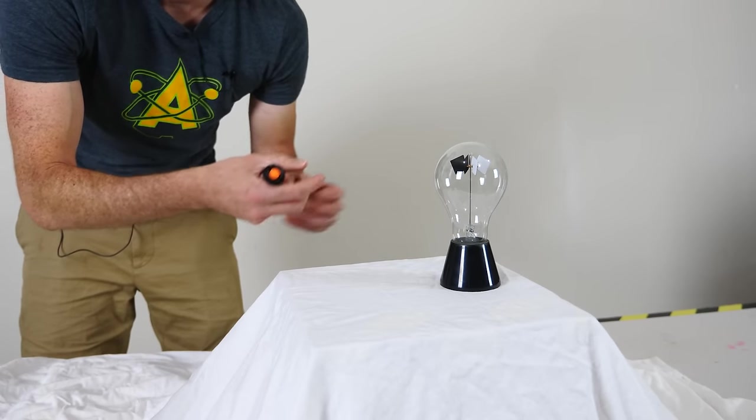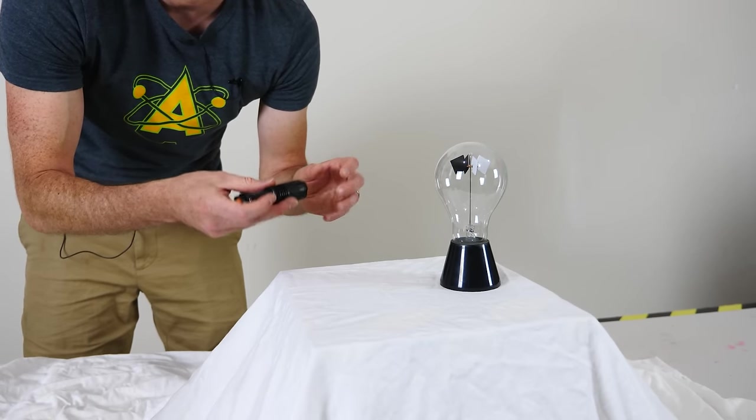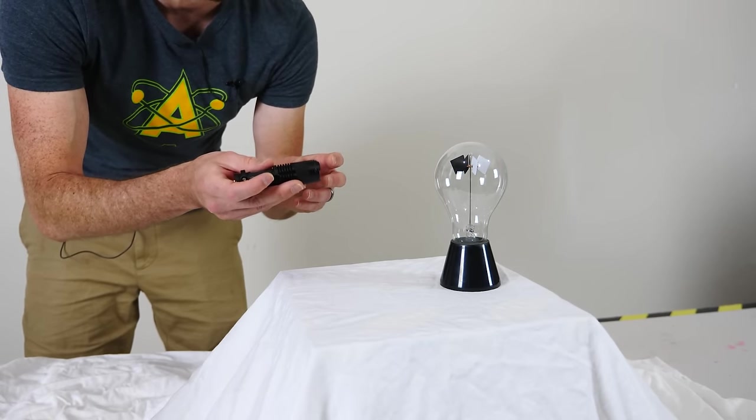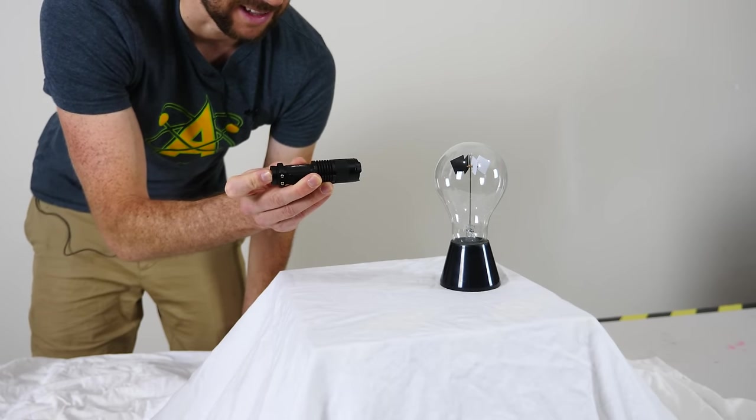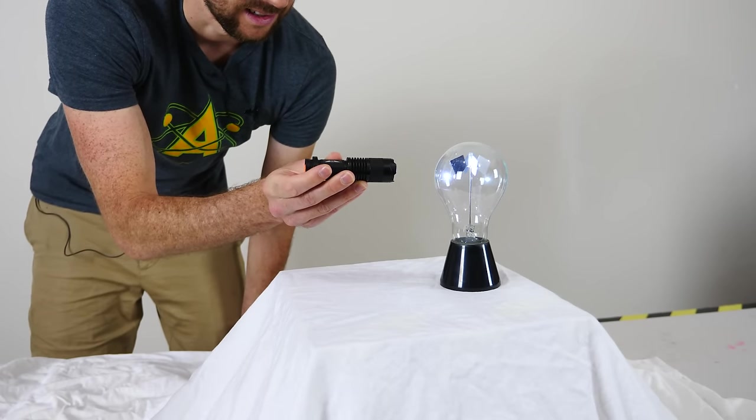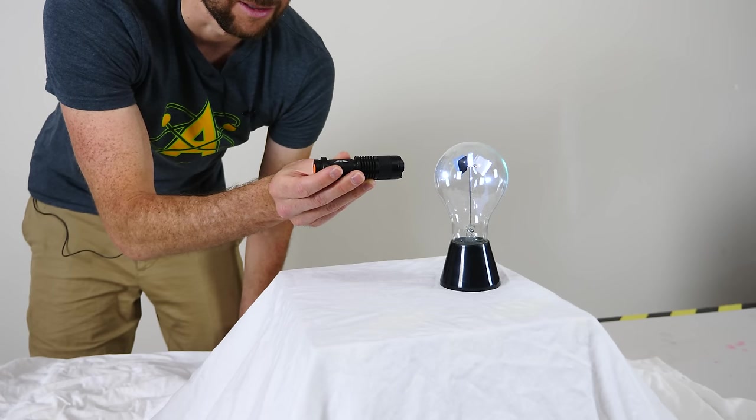If you don't know what a radiometer is, it's a way to measure the amount of radiation hitting an object. It was invented in 1873 by Sir William Crookes. Look what happens when I just shine a flashlight on it. It slowly starts moving.